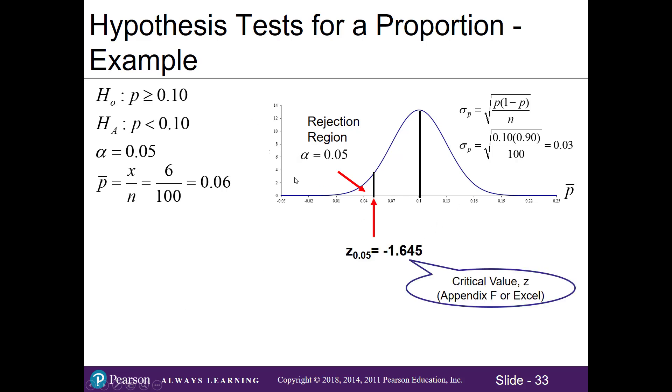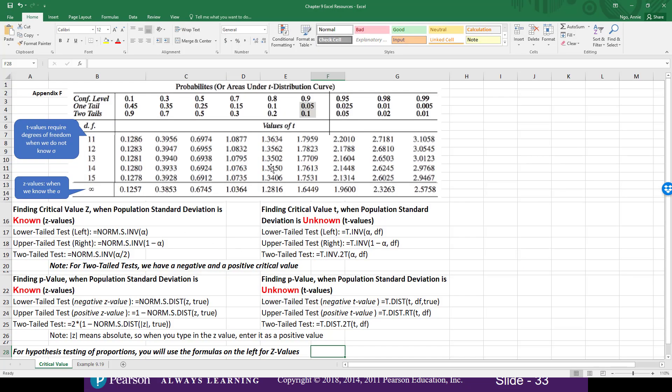Based on our alpha level of 0.05, our cutoff value, our critical value for z is negative 1.645, and you can get that using appendix F or Excel. In my Excel, I have a snapshot of appendix F and it has the z values in it. Since we are working with a lower tail test, a one tail test, and the alpha is 0.05, we go down to our infinity row because that's where our z values are, we have 1.6449.